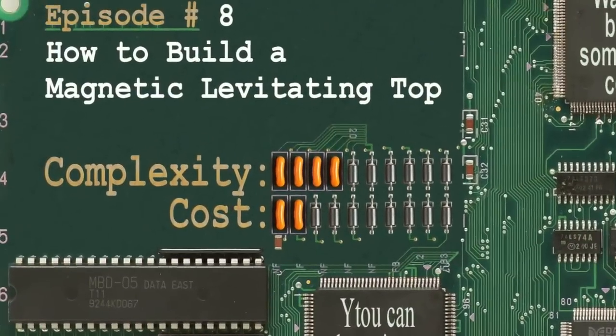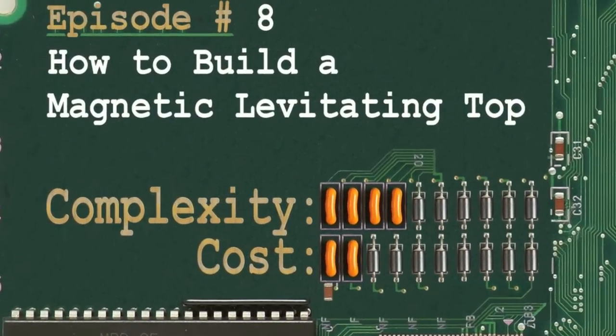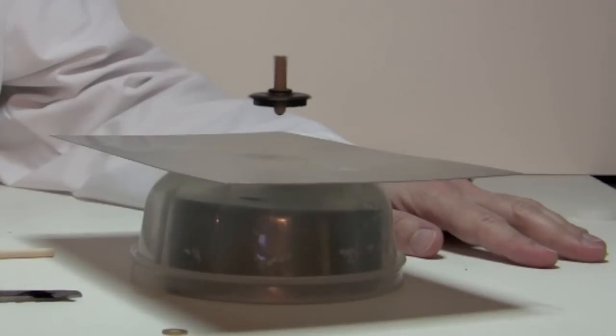Well, let's talk about this and a few other loopholes in Earnshaw's theorem, and actually build a few magnetic levitation devices. Earnshaw's theorem is only applicable to fixed magnets, but in this setup one magnet is actually moving. It is spinning and gyroscopic resistance force in combination with precession stabilizes the magnet. But enough theory, let's build one of these levitating tops.